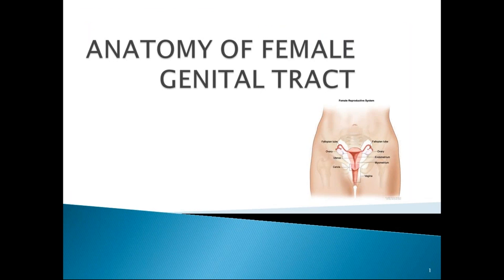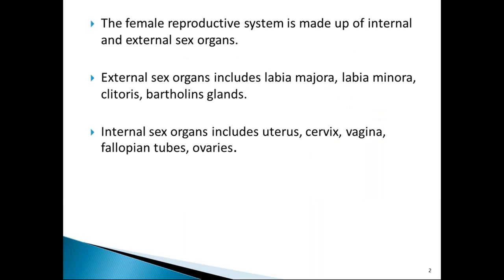Good morning all. Today's class is on anatomy of the female genital tract. The female reproductive system consists of internal and external genitalia. External genitalia collectively form the vulva, and internal genital organs include the uterus, cervix, vagina, fallopian tubes, and ovaries.